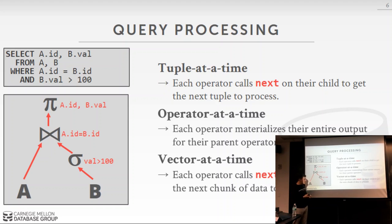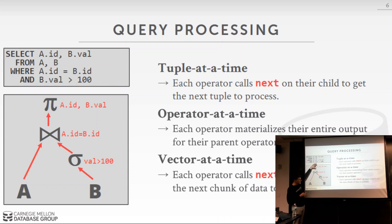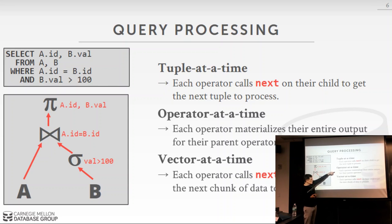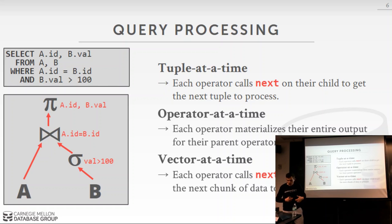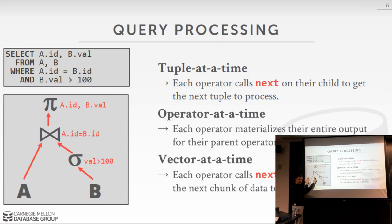The best of both worlds is the vector-at-a-time model, proposed by the VectorWise guys. It's like the tuple-at-a-time model — starting at the top going down — but instead of getting one tuple when you call next, you get a vector or batch of tuples. This reduces the number of function calls as in the operator-at-a-time model, but you don't need to materialize the entire table. When we talk about the HyPer compilation approach, they try to do tuple-at-a-time but push things up like the operator model, avoiding function calls and branches — getting better cache locality and reducing instruction count.